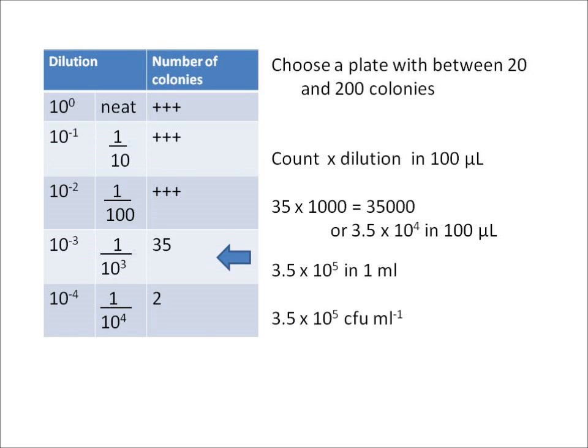So what we're saying is that 3.5 times 10 to the 5 of the bacteria that were in the original sample have been able to form colonies. What we don't know is if there were other bacteria in there which just weren't, for example, able to grow in the medium and conditions that we provided. So instead of saying 3.5 times 10 to the 5 bacteria per ml, we say 3.5 times 10 to the 5 colony forming units per ml.